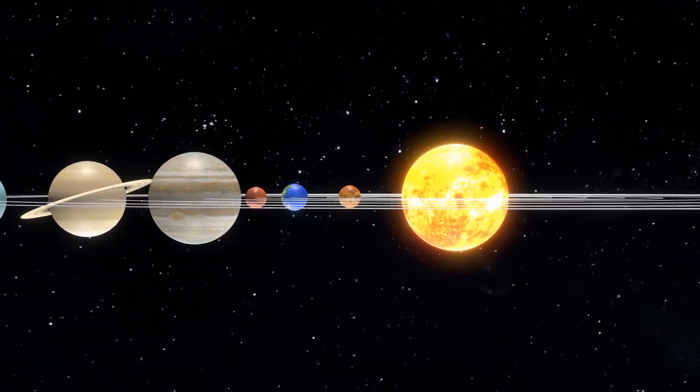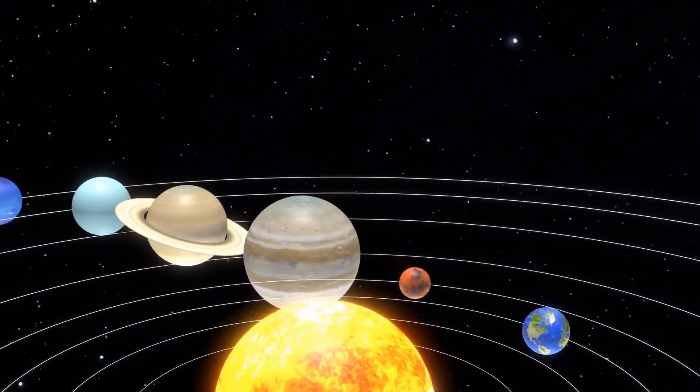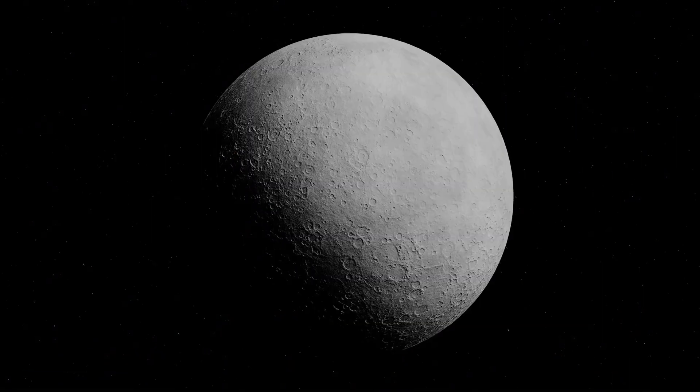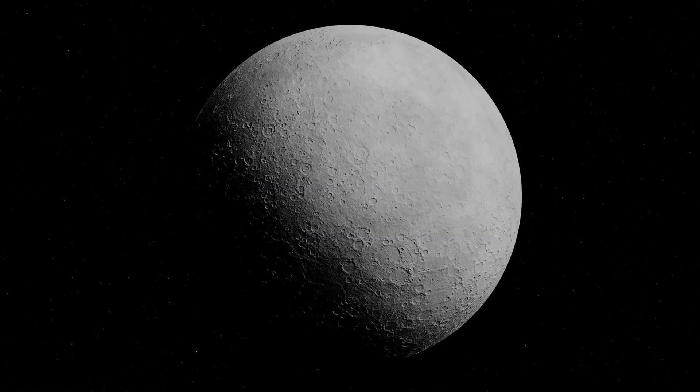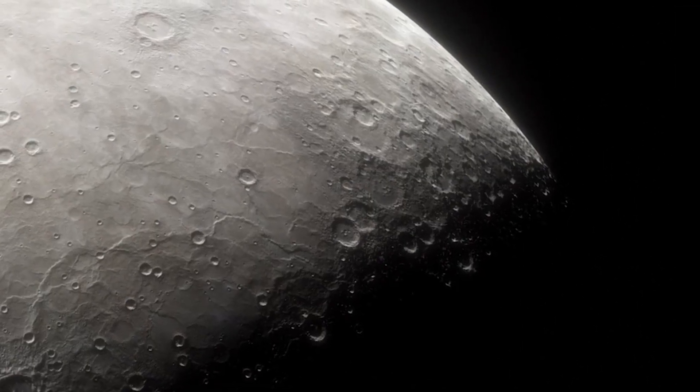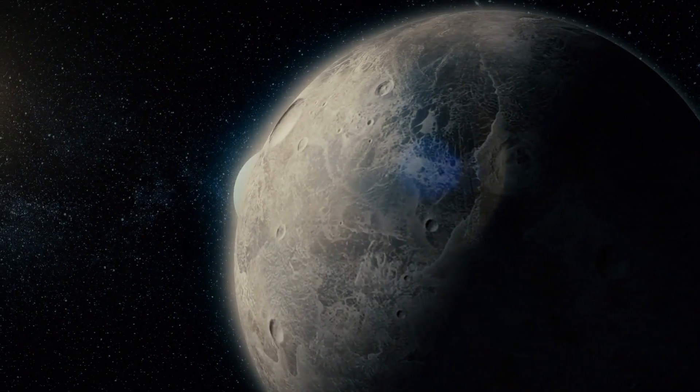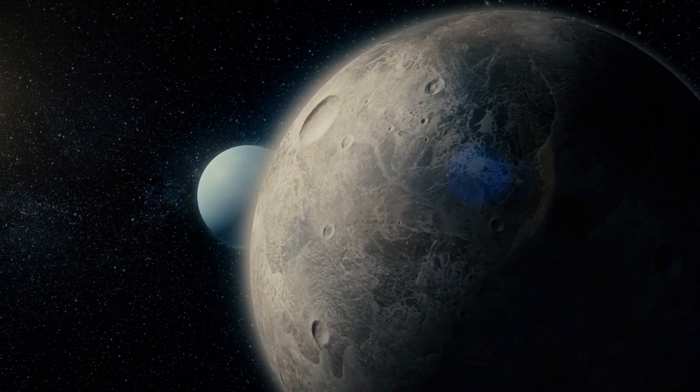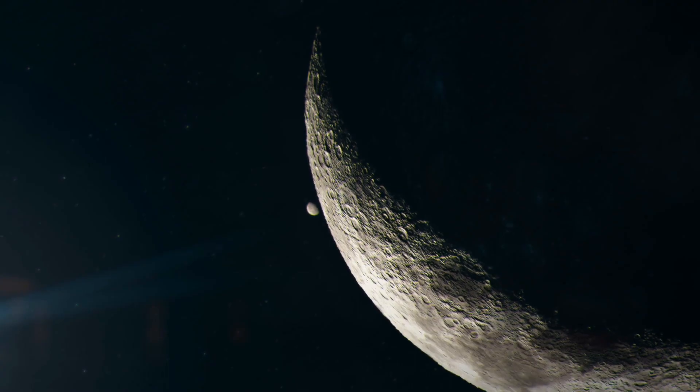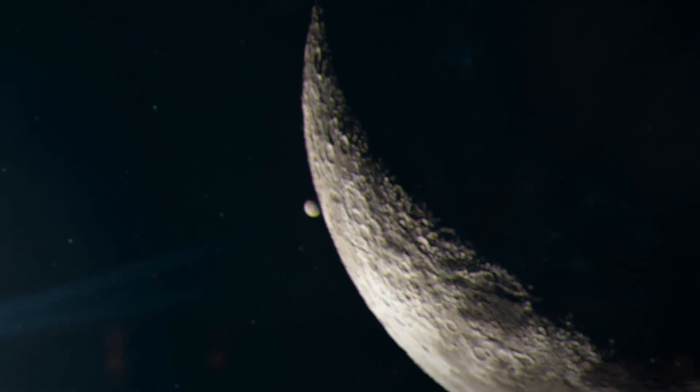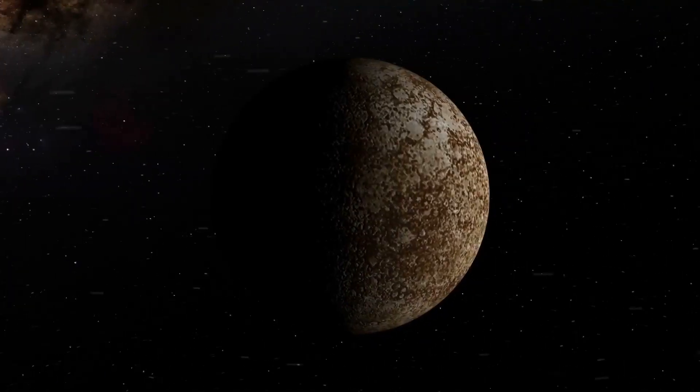This unusual cycle of day and night has extreme consequences for Mercury's surface. The side facing the sun endures searing heat for months, while the side facing away remains bitterly cold for the same duration. As for Mercury's atmosphere, or rather its lack of one, the thin layer it does have is called an exosphere.